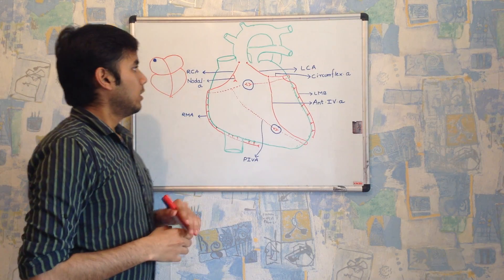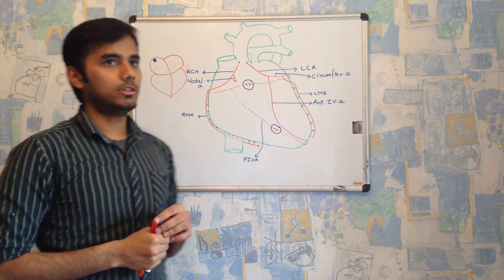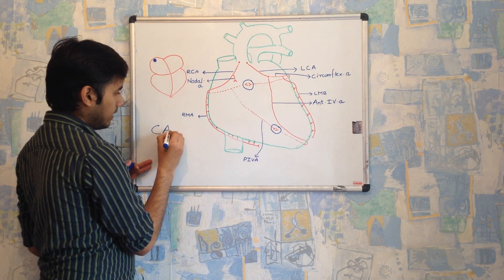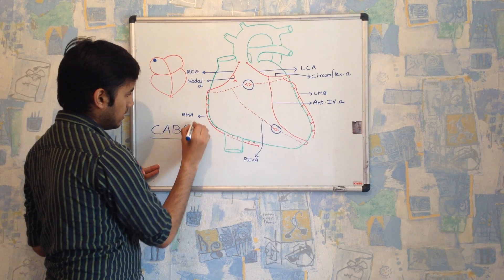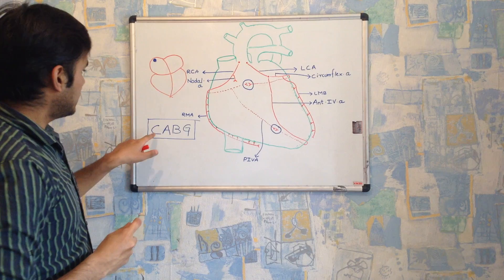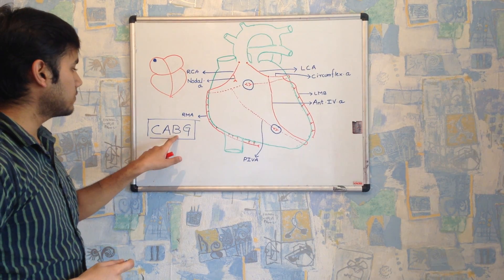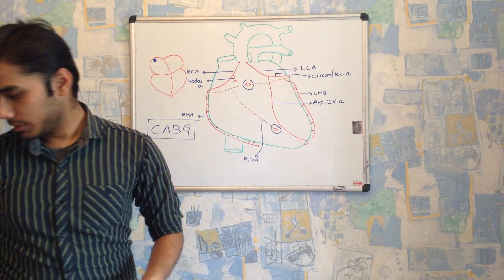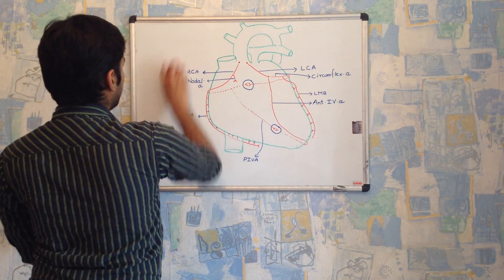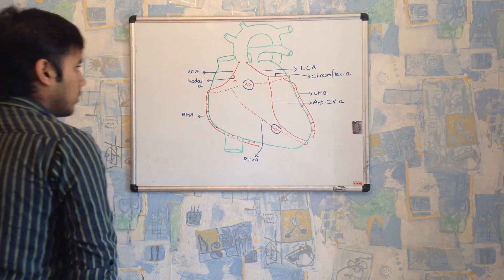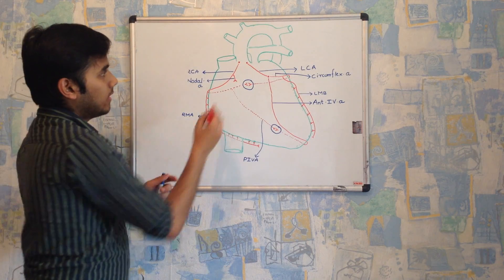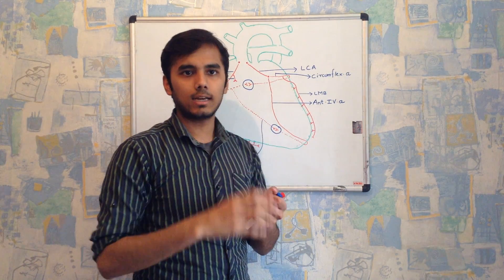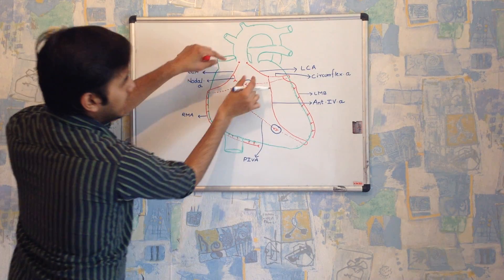One more thing I'd like to mention is CABG — we also call it 'cabbage.' C stands for coronary, A for artery, B for bypass, G for grafting — coronary artery bypass grafting. Suppose either the right coronary artery or the left coronary artery has a formation of plaque inside that artery. What exactly is plaque?